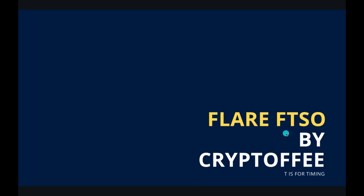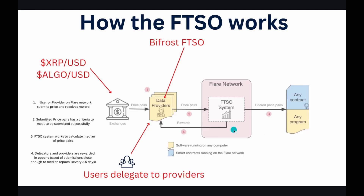The FTSO functions through data providers who sit as a sort of middleware in the stack, working on retrieving price pair data from exchanges or other external sources. The data providers offer price pair estimations on-chain to the Flair network, which is then given to the users.